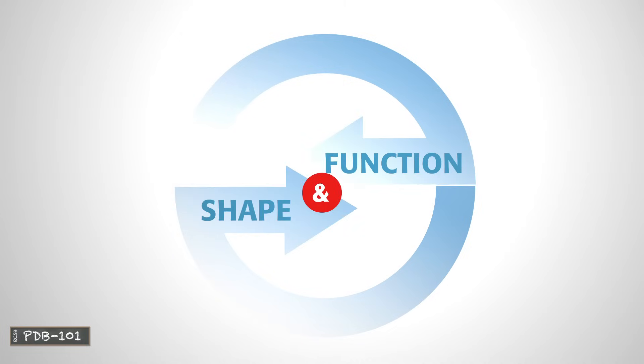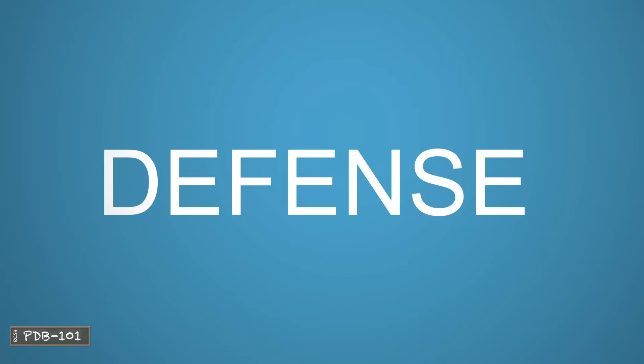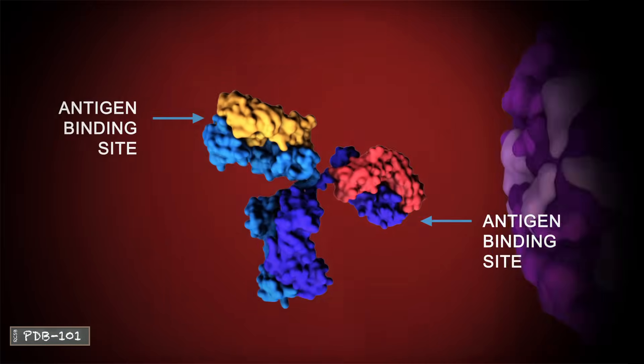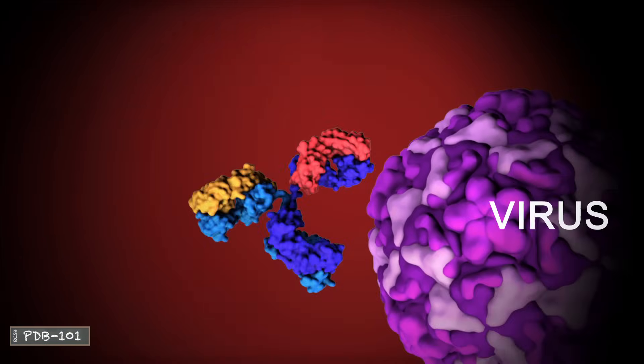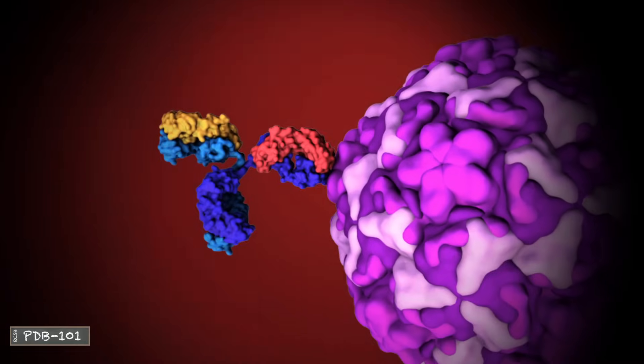The three-dimensional shapes of proteins determine their function. The flexible arms of antibodies protect us from disease by recognizing and binding to pathogens and targeting them for destruction by the immune system.